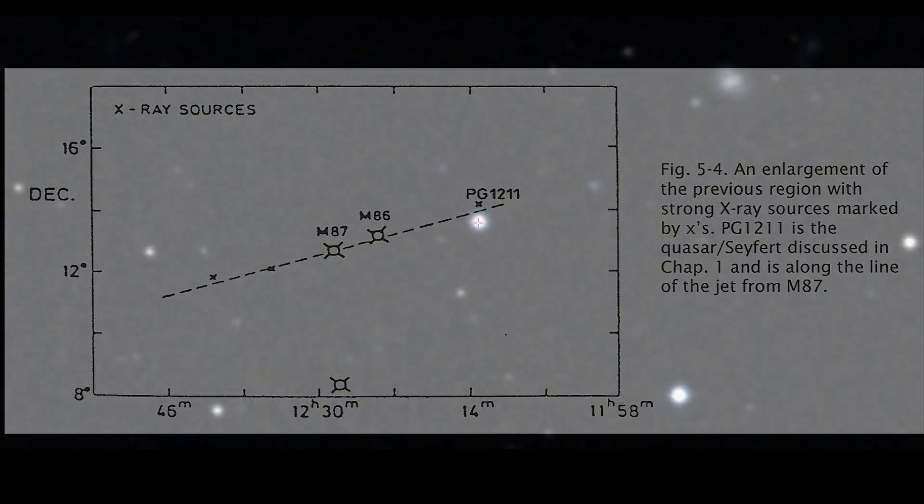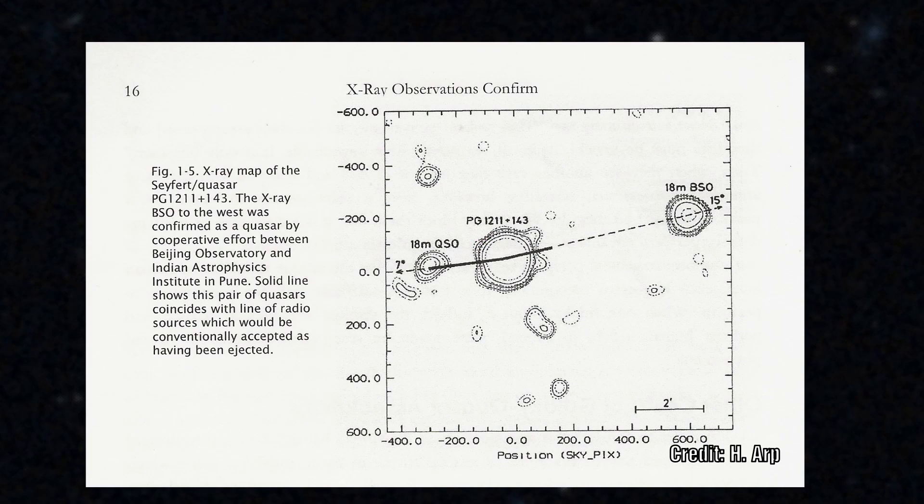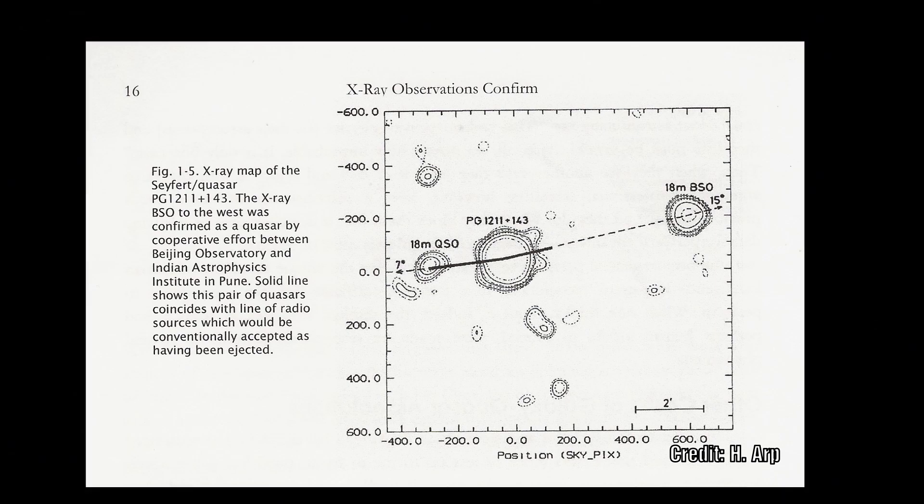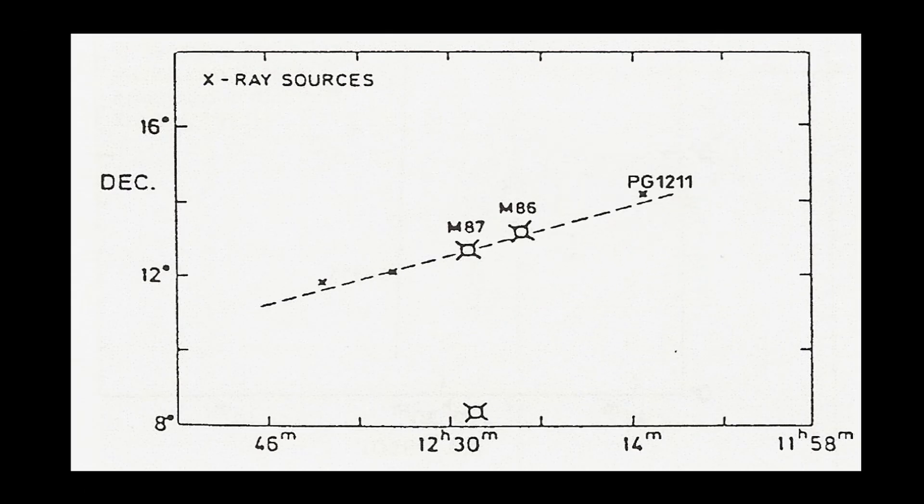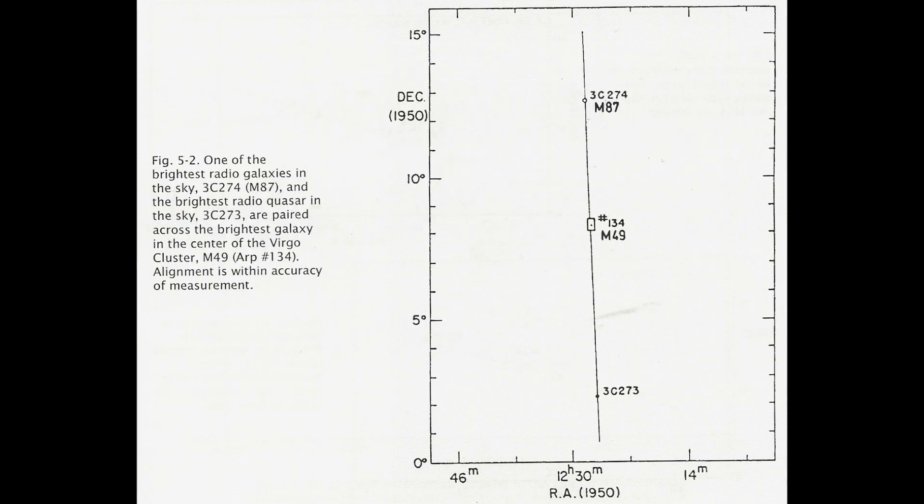We know that PG 1211 is actually a Seyfert galaxy which is also ejecting material. Here we see a clear hierarchy of older galaxies creating newer ones, which in turn create newer ones themselves, and so this process goes on and on and on.